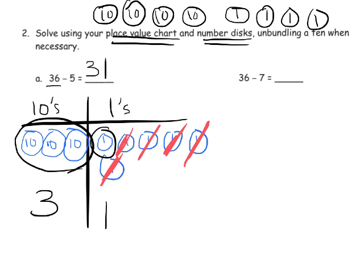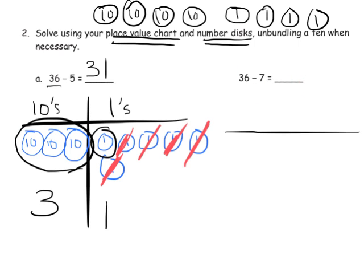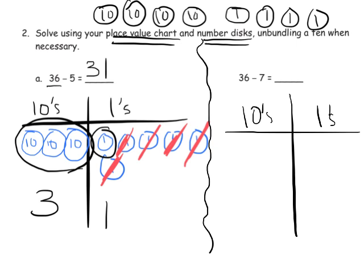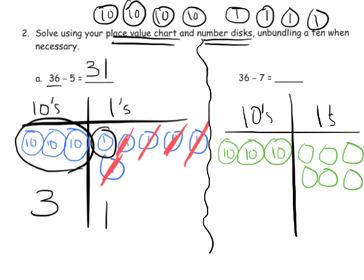Similarly, if we're going to model 36 minus seven right here, 36 minus seven, again, we're going to use that same place value chart, and it's going to be tens and ones, and I'll change my color so we don't get confused. And to model 36, I'm going to model one, two, three tens in the tens column, and I'm going to model six in the ones column. One, two, three, four, five, six. So there I've modeled 36.